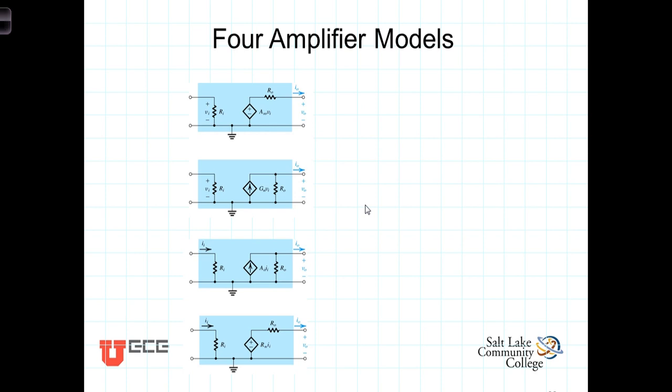We've seen that amplifiers are devices defined in terms of an input voltage and current and an output voltage and current. We've seen that we can model those devices in terms of a dependent source with an output resistance and an input resistance. It turns out that there are four different equivalent models, or four different equivalent ways, of modeling the amplification process.